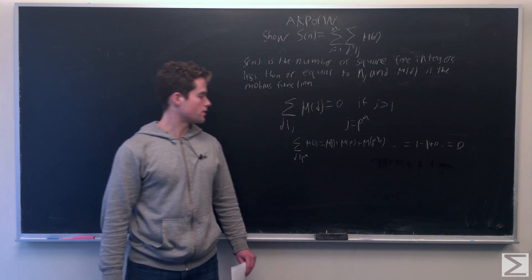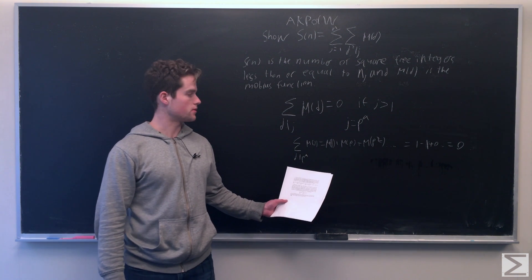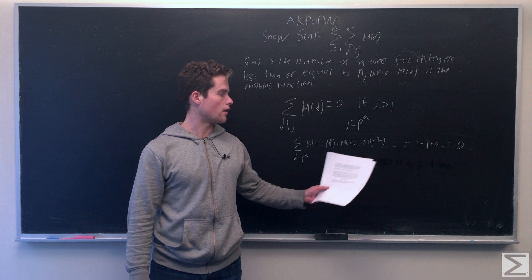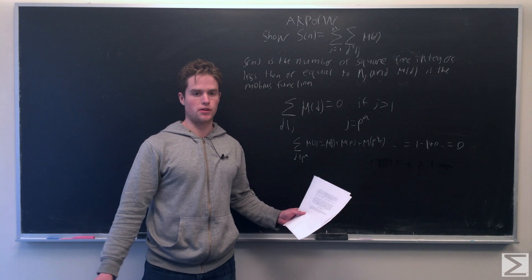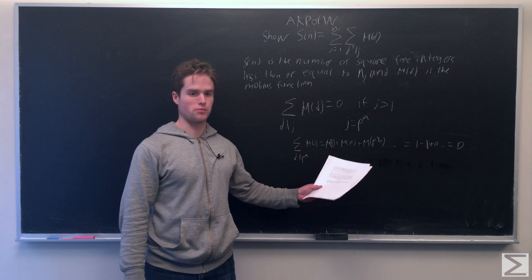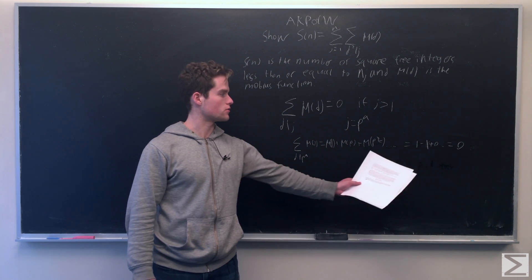If j is a power of a prime, then this sum is just Mobius function of 1, of p, of p squared, et cetera. Mobius function of p squared and greater is just 0. Mobius function of p is minus 1, and 1 is 1. So this whole sum is 0.